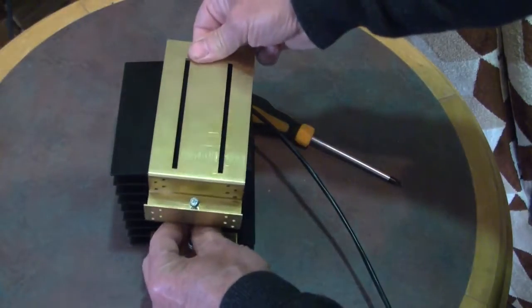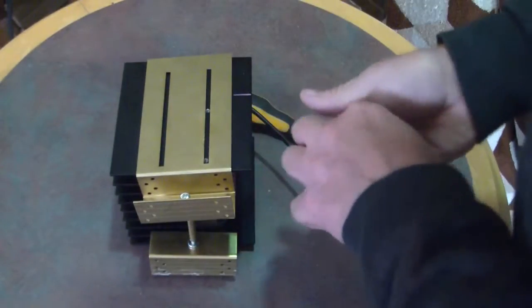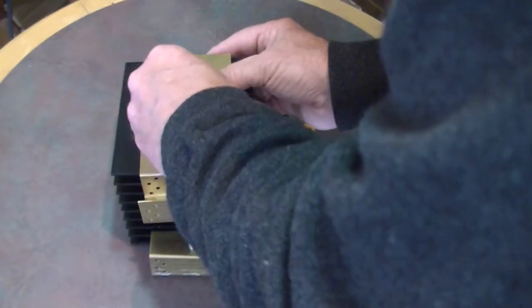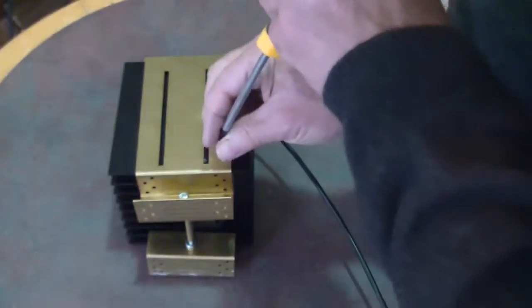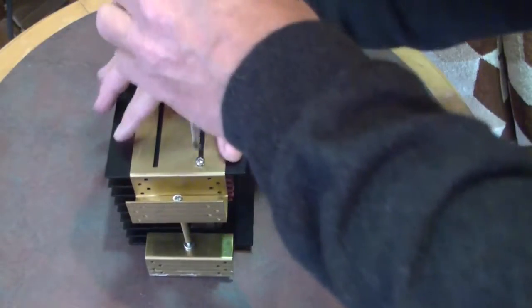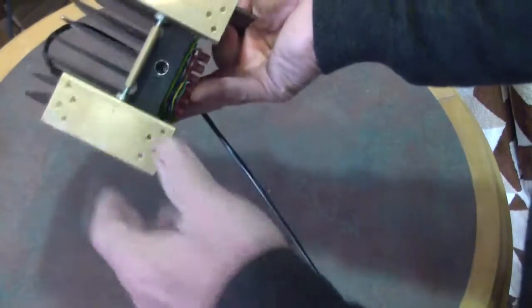This is just a close-up to show the assembly of the spacer again. So we just need those screws not quite tight at this point, and we have our completed assembly ready for a tryout.